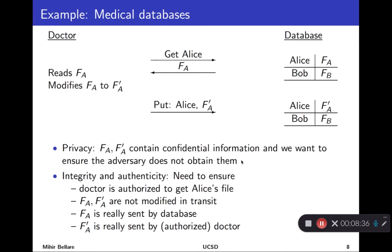Integrity and authenticity would enter when you consider, for example, who is authorized to get the file. The doctor is authorized, but maybe not someone else. You also want to ensure that when the doctor gets the file, it wasn't modified in transit — if someone could change information in there, it could be fatal. They could erase that Alice has a certain allergy to a certain medication, or change the medical history. Similarly, on the way back, you want to make sure the file wasn't modified. All of these concerns are captured by the goals we're talking about.